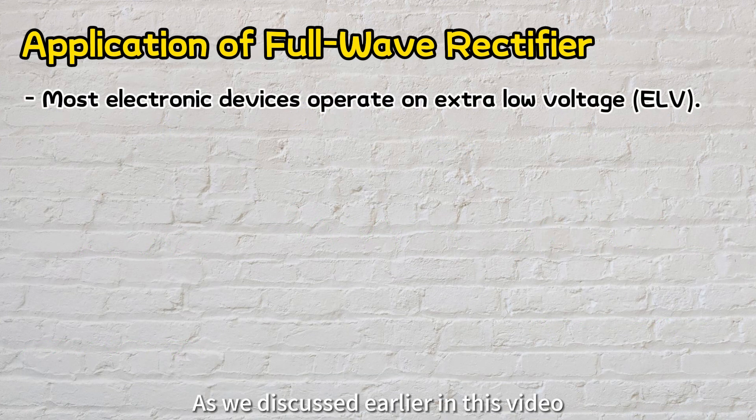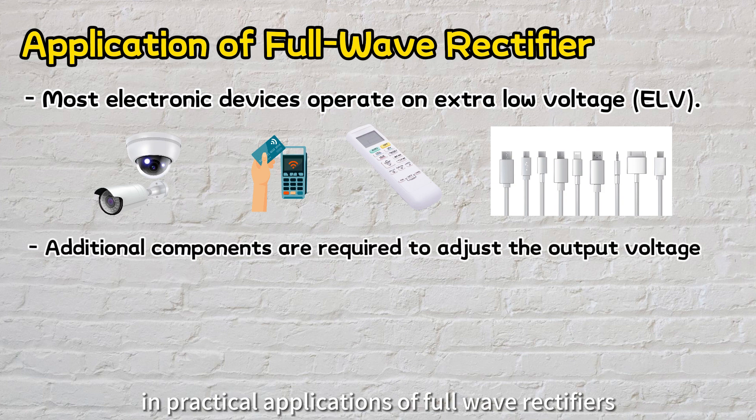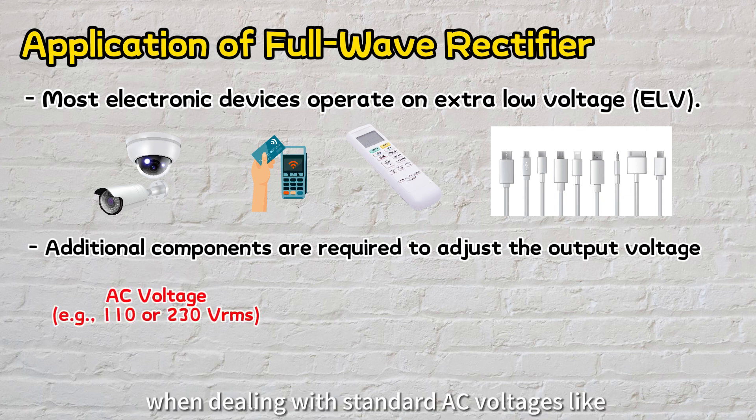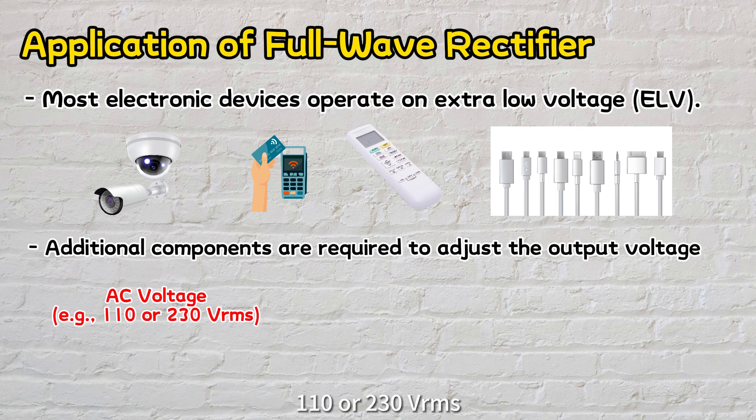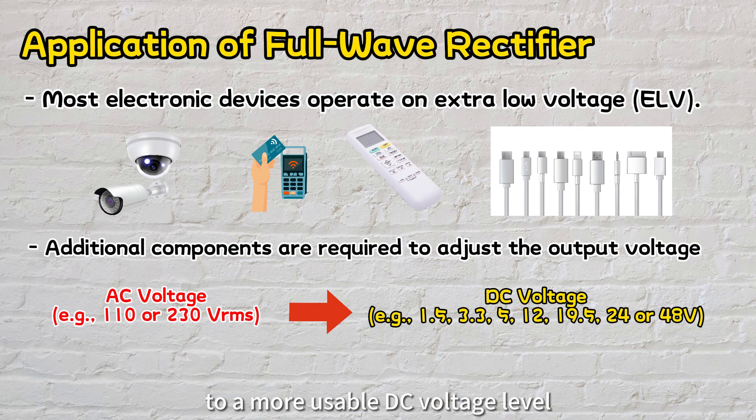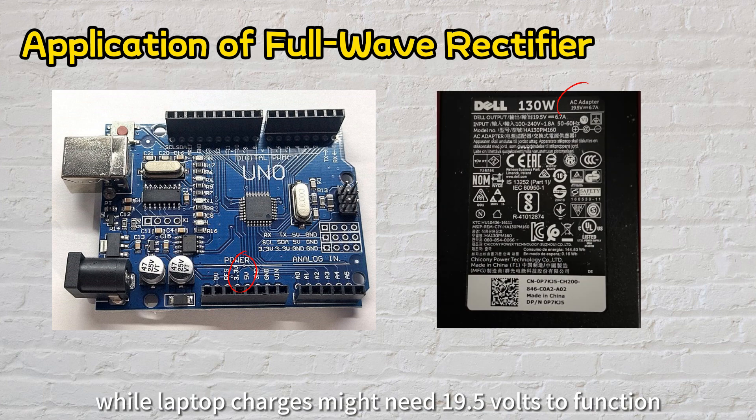As we discussed earlier in this video, most electronic devices operate on extra-low DC voltage. Therefore, in practical applications of full-wave rectifiers, additional components are often integrated to adjust the voltage according to specific needs. For instance, when dealing with standard AC voltages like 110 or 230 Vrms, it is necessary to lower this voltage to a more usable DC voltage level, typically ranging from 1.5 up to 48 V for most electronic devices. For example, some microcontrollers may require 3.3 or 5 V, while laptop chargers might need 19.5 V to function.